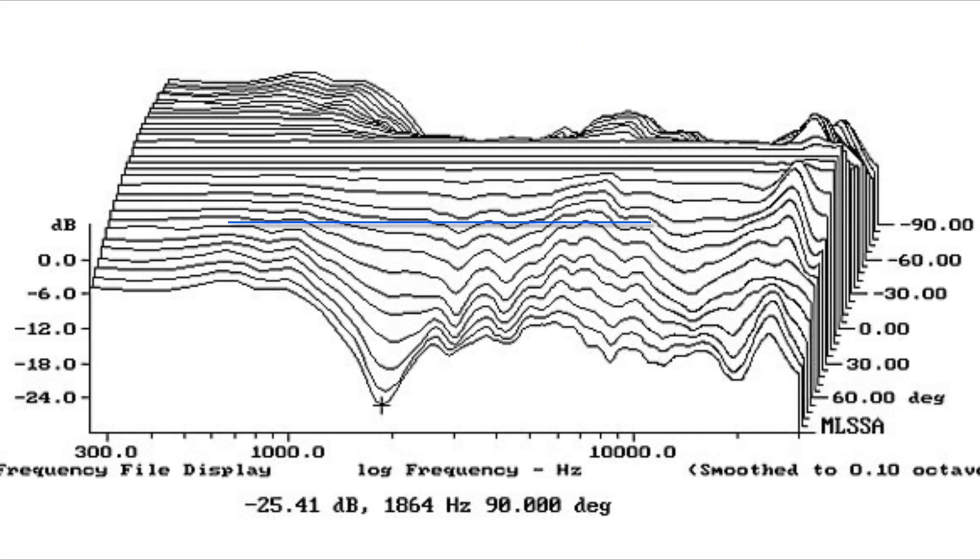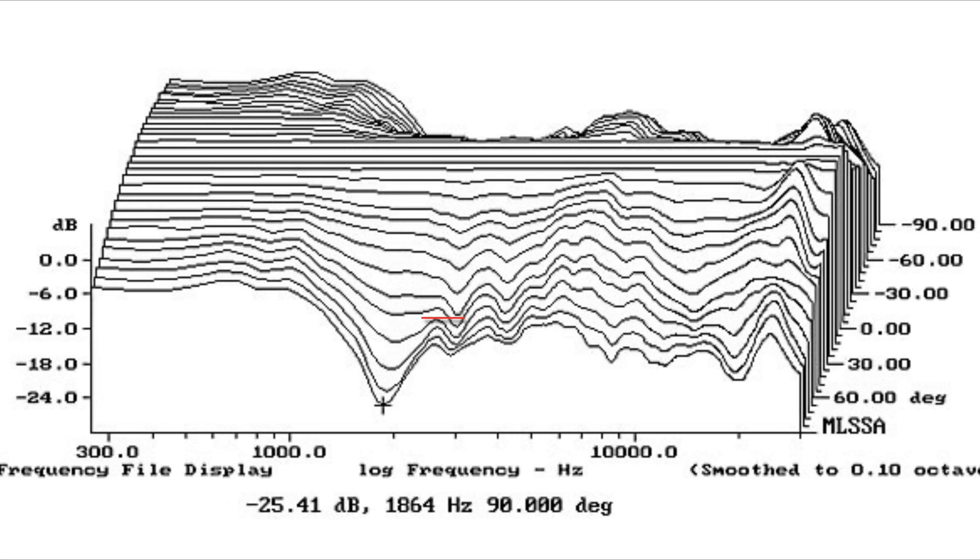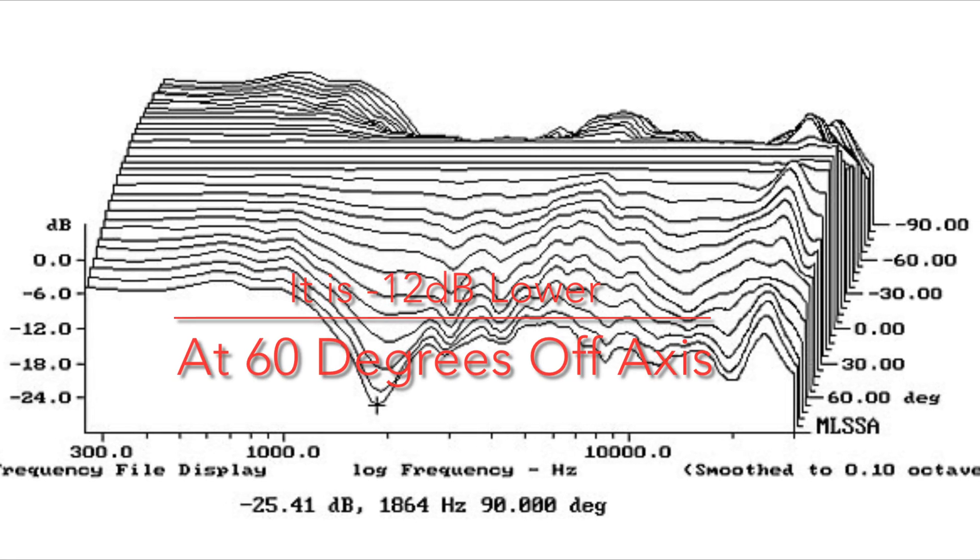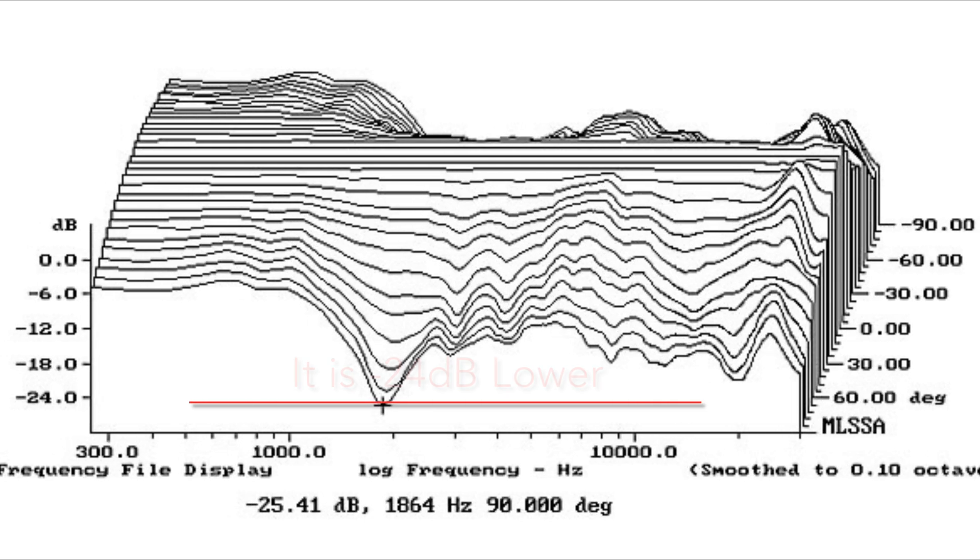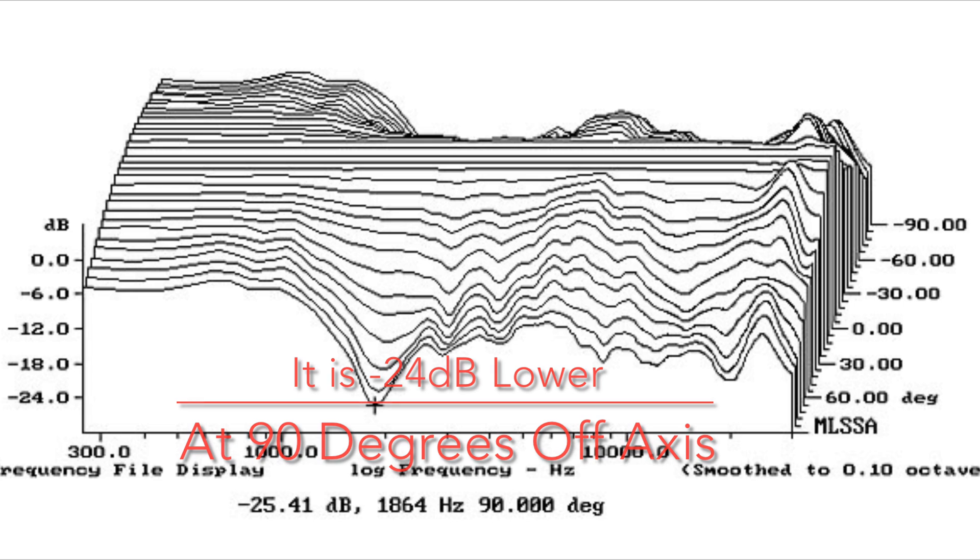At 30 degrees off from the center, it is down about negative 3 dB. At 60 degrees off from the center it is down about negative 12 dB. At 90 degrees it is much lower, about negative 24 dB, comparing to the speaker on axis frequency response.